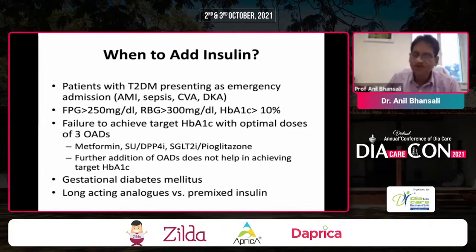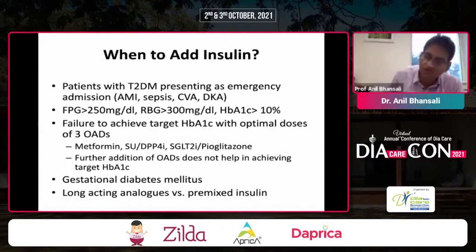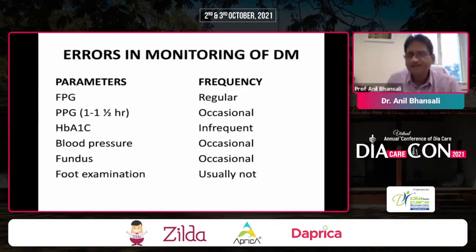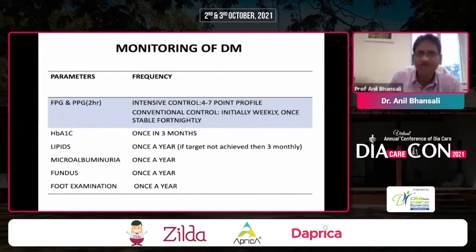Further addition of OADs does not help in achieving the target in global glycemic control. For gestational diabetes, long-acting analogs versus premixed insulin remains a debate, with many companies promoting their combination data versus using basal insulin alone. Errors in monitoring of diabetes are common — these parameters are rarely done in clinical practice. Monitoring should follow specific parameters at defined frequencies in clinical practice.